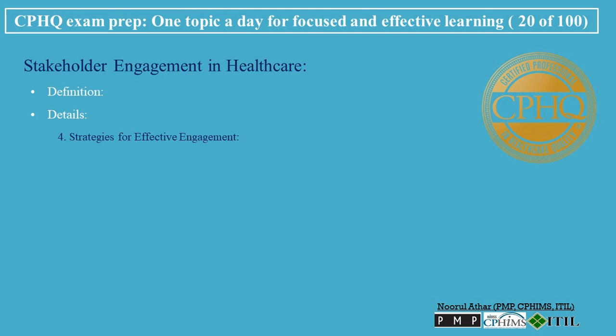Strategies for Effective Engagement: Clear objectives involve establishing clear goals for the engagement process to ensure it is focused and effective. Inclusivity means actively seeking to include a diverse range of stakeholders, particularly those who are often underrepresented. Transparency involves maintaining openness throughout the process to build trust and credibility. Follow-up demonstrates how stakeholder input has been considered and implemented.